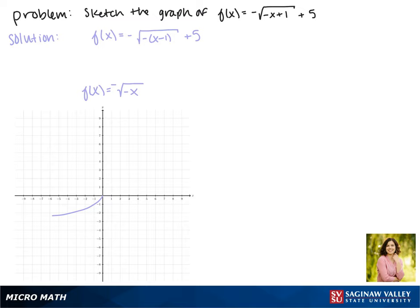Now we'll look at our horizontal translation. Because we are subtracting 1 from x, that moves our function one space to the right, so that now it passes through the point.